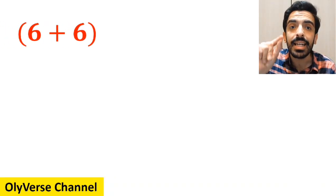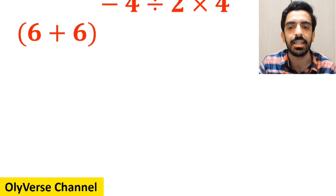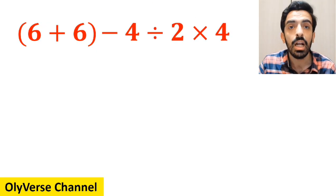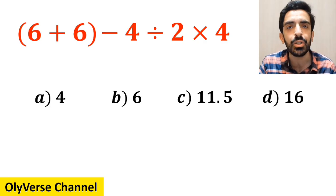What is the value of the expression 6 plus 6 inside the parenthesis, then minus 4 divided by 2 multiplied by 4? Which option do you think is the correct answer to this question?